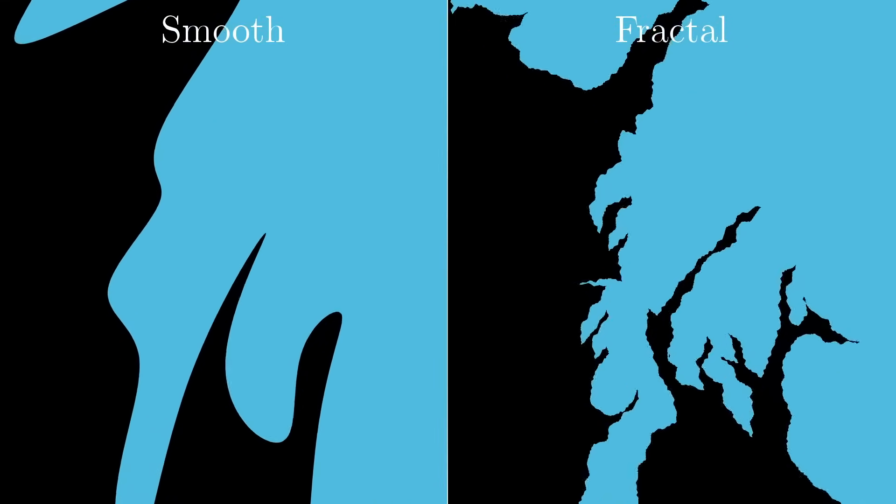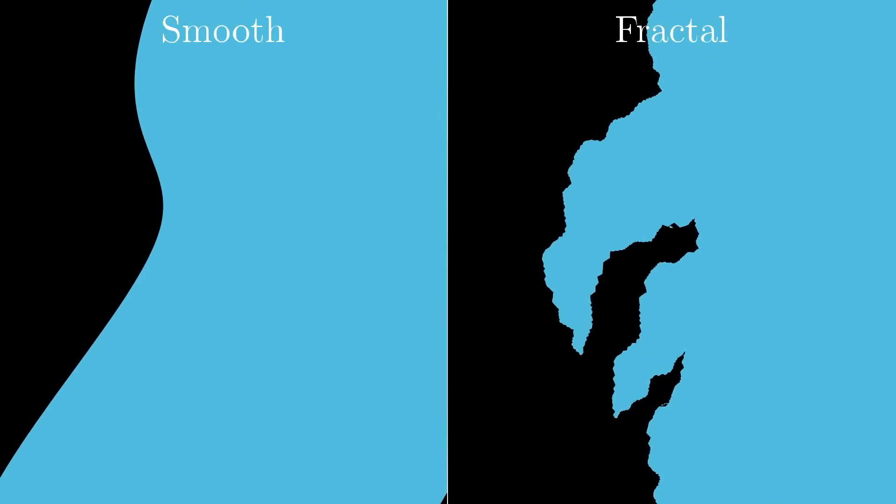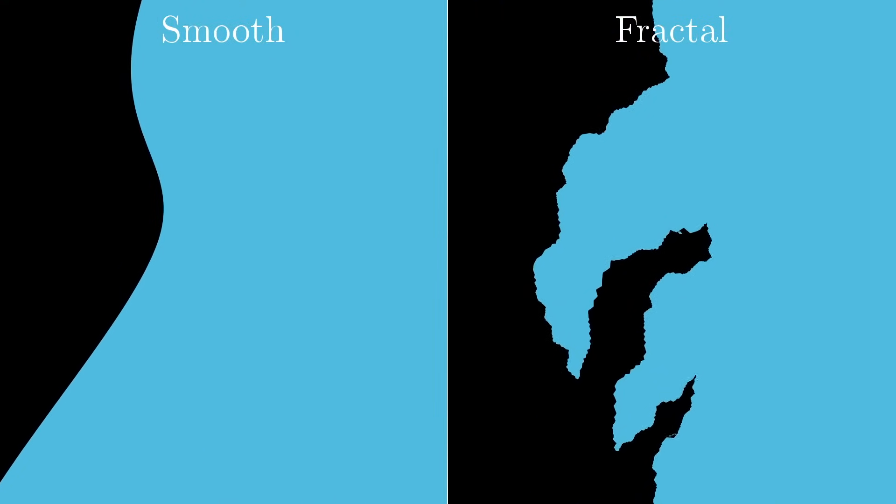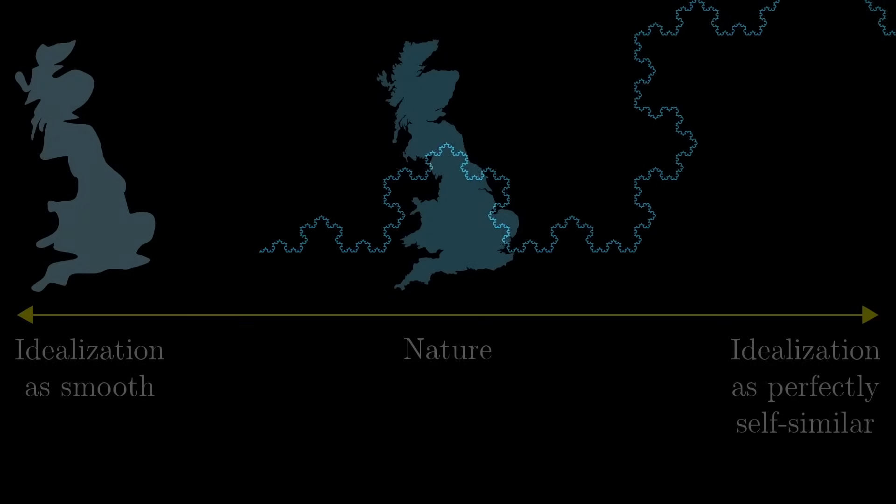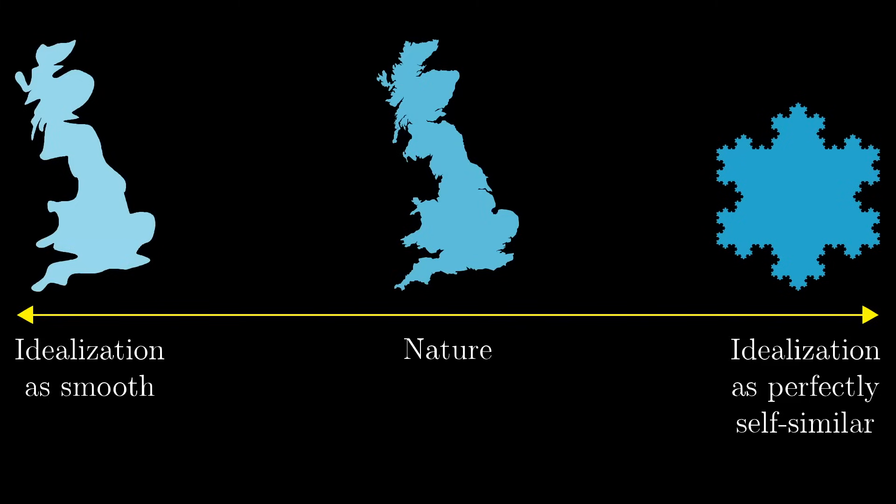But Mandelbrot saw this as overly idealized, or at least needlessly idealized, resulting in models that neglect the finer details of the thing that they're actually modeling, which can matter. What he observed is that self-similar shapes give a basis for modeling the regularity in some forms of roughness. But the popular perception that fractals only include perfectly self-similar shapes is another over-idealization, one that ironically goes against the pragmatic spirit of fractal geometry's origins.